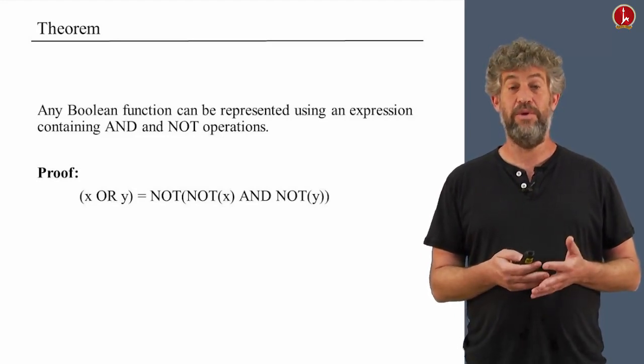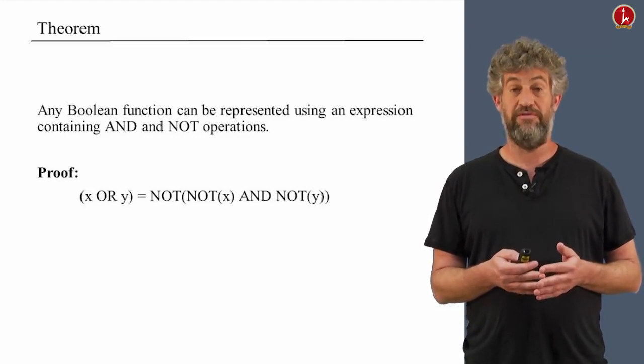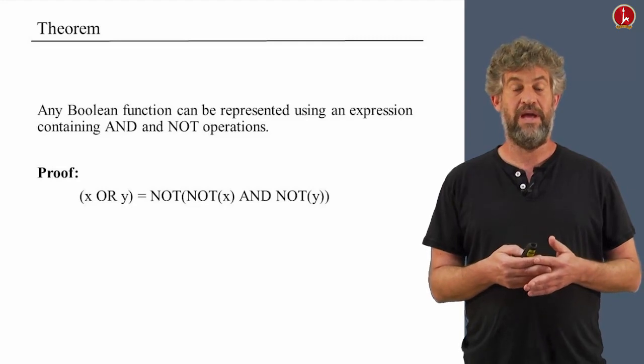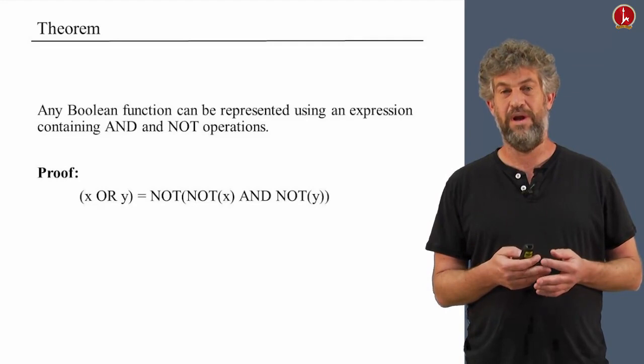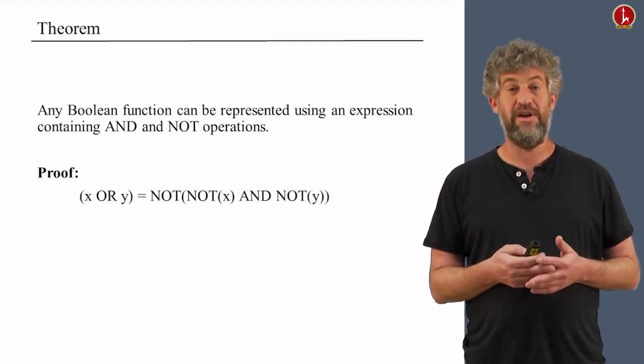So now we have a really more remarkable theorem that we only need these two basic operations to actually compute every Boolean function. Can we go even less? Can we give up, let's say, the AND gate? Well, that doesn't make sense because NOT only takes one value to one value, doesn't even allow us to combine anything.